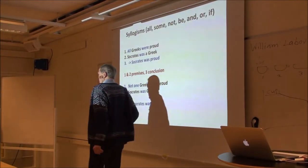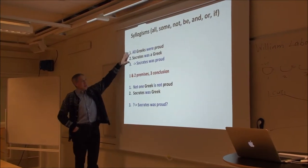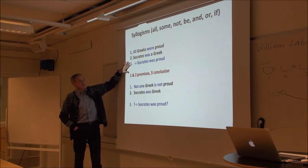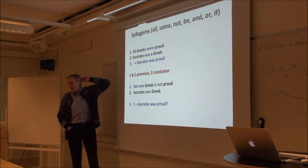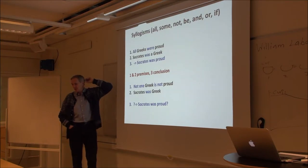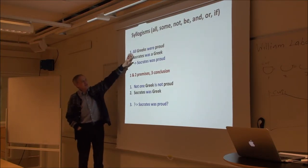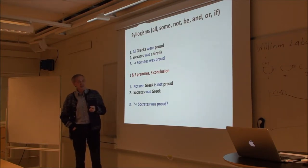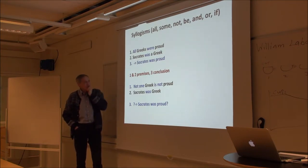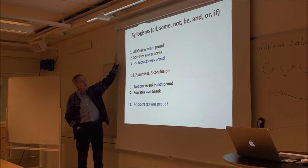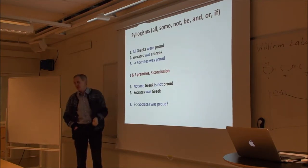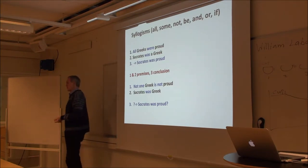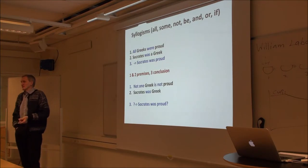Here is a typical syllogism: all Greeks were proud; Socrates was a Greek; thus it follows Socrates was proud. Notice that the words in blue — 'all,' 'were,' 'was' — give this structure. We have two premises and one conclusion. This is the classical form of a syllogism. Now test your logical ability: 'not one Greek is not proud; Socrates was Greek; does it follow that Socrates was proud?' Two students say yes.